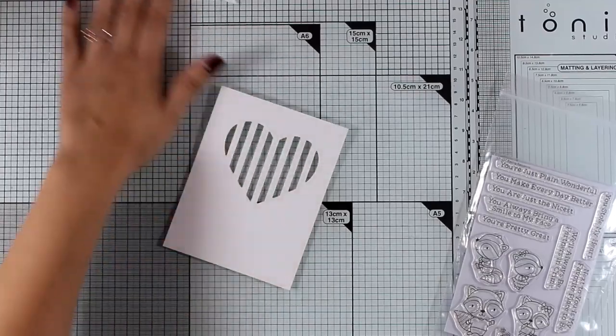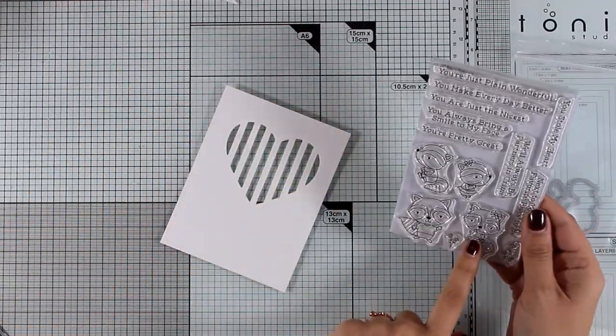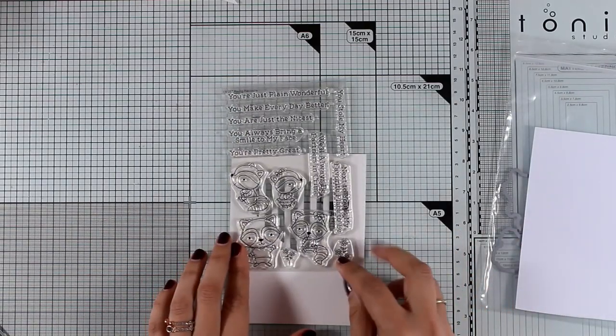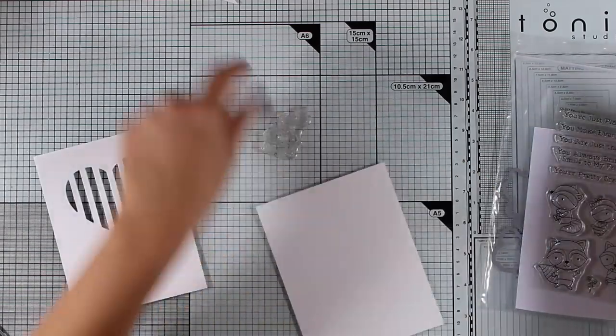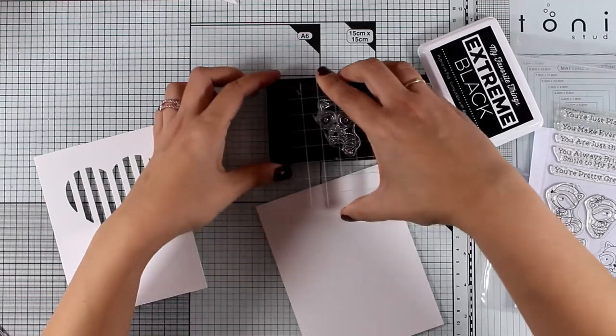Now I'm going to combine this with a stamp from the raccoon stamp set which has four different raccoon designs and I think they are all adorable. I'm trying to choose which one I'll go with. I'm going to stamp that on a piece of white paper using the black extreme ink by My Favorite Things.